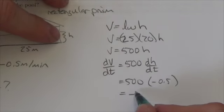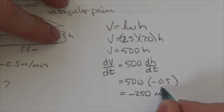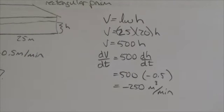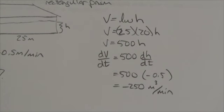So now this is going to end up being negative 250 meters cubed per minute, which makes total sense. That is volume per unit time. That's the rate at which it's draining out of the pool.